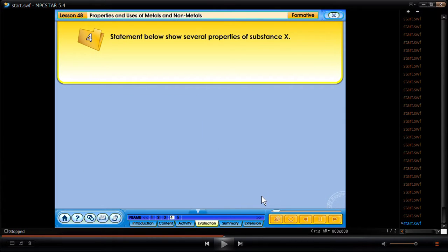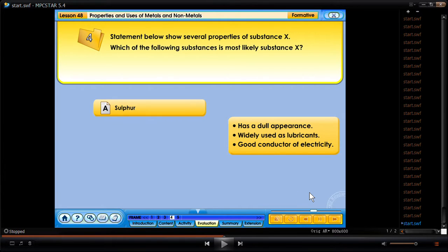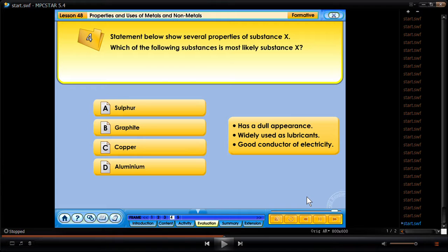Statement below shows several properties of substance X. Which of the following substances is most likely substance X? A. Sulfur, B. Graphite, C. Copper, D. Aluminum. Your answer is correct.